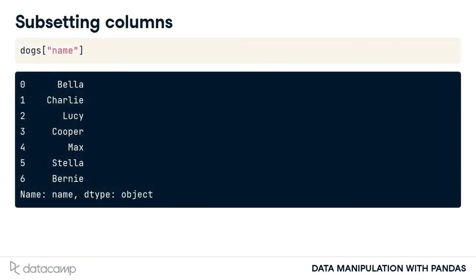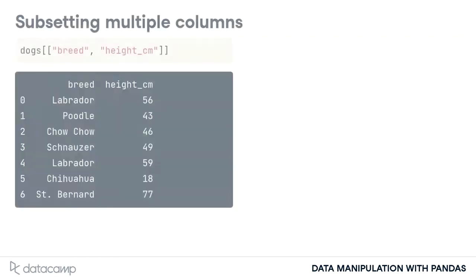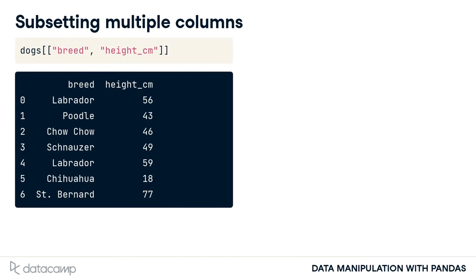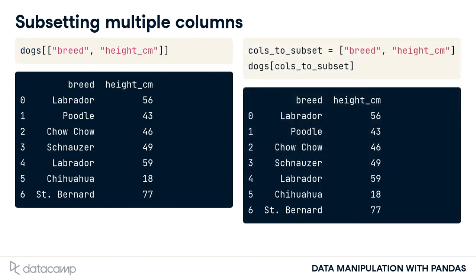We may want to zoom in on just one column. We can do this using the name of the data frame followed by square brackets with the column name inside. Here we can look at just the name column. To select multiple columns, you need two pairs of square brackets. The outer square brackets are responsible for subsetting the data frame, and the inner square brackets are creating a list of column names to subset. This means you could provide a separate list of column names as a variable and then use that list to perform the same subsetting, though it's usually easier to do in one line.